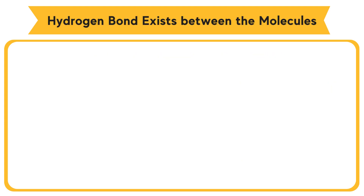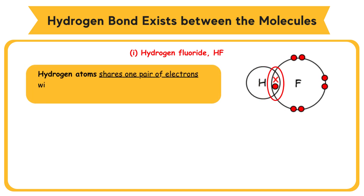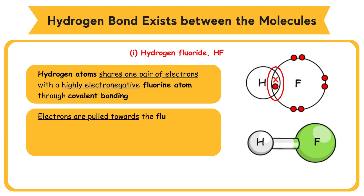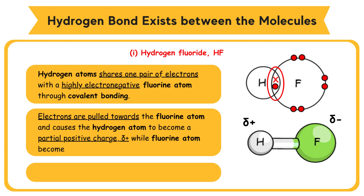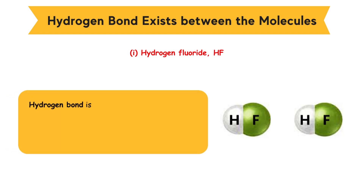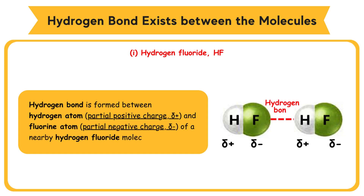Hydrogen bond exists in Hydrogen Fluoride, HF. Hydrogen atom shares one pair of electrons with a highly electronegative fluorine atom through covalent bonding. Electrons are pulled towards the fluorine atom and cause the hydrogen atom to become a partial positive charge, while fluorine atom becomes a partial negative charge. Hydrogen fluoride becomes a dipole molecule. Hydrogen bond is formed between the hydrogen atom, partial positive charge, and the fluorine atom, partial negative charge, of a nearby hydrogen fluoride molecule.